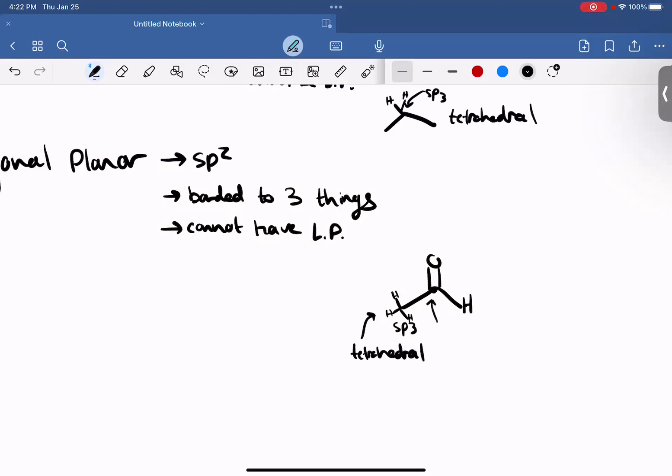So what about this carbon right there? How many things is it bonded to? We need to be on the same page with what I mean by things. A double bond still counts as bonded to one thing. If we take a look at this carbon here, what's its hybridization? Well, there's one bonding region, two bonding regions, and a third one there. And there's a double bond. So there's a non-hybridized P orbital. I'm immediately saying that this is SP2 hybridized. Is it bonded to three things? It's bonded to a carbon, hydrogen, and oxygen. That's three things. That means I must be trigonal planar.